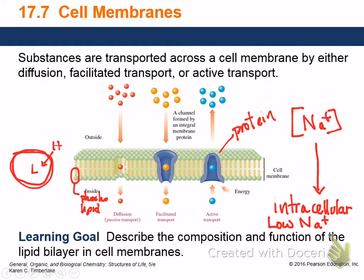There's also active transport. What does that sound like? It requires some input of energy. Sometimes it's tied to the movement of another ion, or it's tied to the consumption of ATP — energy pulling ions through. So we have diffusion or passive transport, facilitated transport, and active transport. Only active transport requires the use of energy of some sort.